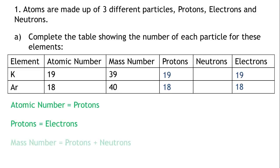Mass number equals the number of protons plus the number of neutrons. We can rearrange this formula to give us neutrons equals mass number minus protons. Potassium has a mass number of 39 and has 19 protons. 39 minus 19 equals 20. Potassium therefore has 20 neutrons.